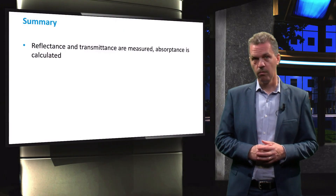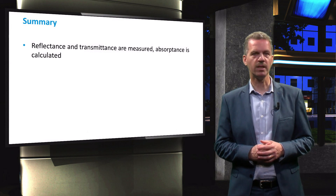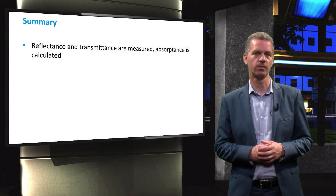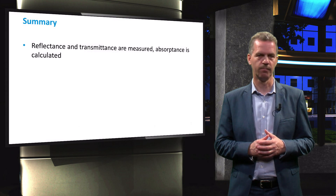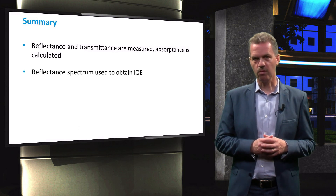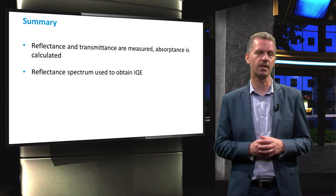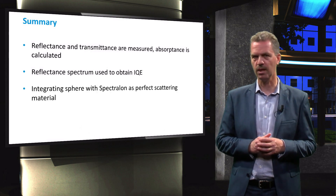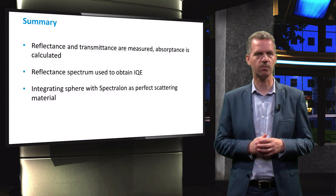To summarize this video, we have demonstrated a typical spectrometer setup that is capable of measuring the reflectance and transmittance spectrum of solar cells and materials. The absorptance can be subsequently calculated. We demonstrated how the reflectance spectrum is used together with the external quantum efficiency to determine the internal quantum efficiency of a solar cell. And finally, we have shown the various configuration options of the integrating sphere, which is coated with the perfectly scattering spectralon material.